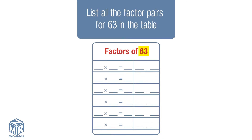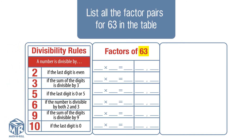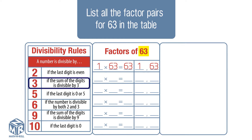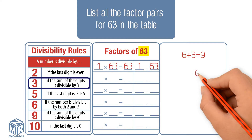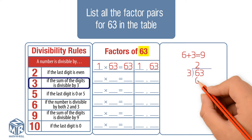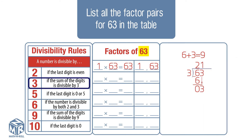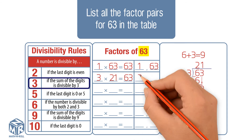List all the factor pairs for 63 in the table. We're going to use the divisibility rules to help. First, we write the factors 1 and 63, since 1 and itself will always be factors of the number. Let's see if 2 is a factor of 63. The last digit is odd, so 2 is not a factor. The sum of the digits is 9, and 9 is divisible by 3, so 3 is a factor. Divide 63 by 3: 63 divided by 3 equals 21. Since division and multiplication are inverse operations, 3 times 21 equals 63, so 3 and 21 are a factor pair.